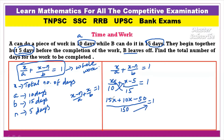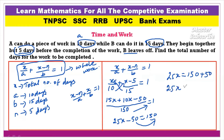Multiplying 150 to the right-hand side: 15x plus 10x gives 25x, minus 50, is equal to 150. So 25x equals 150 plus 50, which means 25x equals 200. Therefore x equals 200 divided by 25, which gives the total number of days as 8 days.